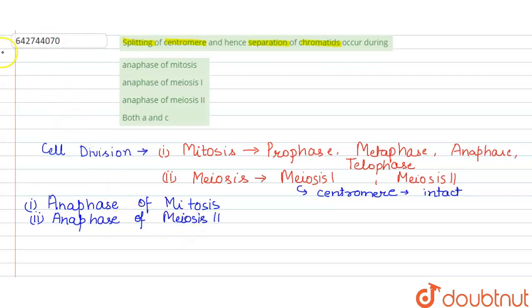So the correct answer here is both A and C — the anaphase of mitosis and the anaphase of meiosis two.